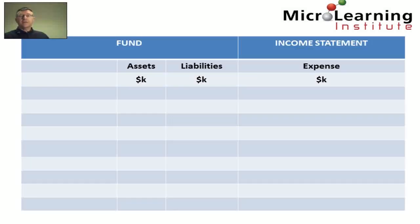When accounting for a defined benefit pension, we must consider both what happens in the fund — which comprises assets and liabilities — and how the activity of the fund translates, in this case, to the income statement of the company Crespo.